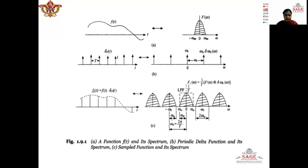To start with the proof of this theorem, we will first consider the message signal F(T). F(T) is a continuous time message signal and it is band-limited to frequency FM. When we draw its frequency spectrum by taking its Fourier transform, the frequency spectrum is represented by F(omega), where the maximum frequency component is omega_m. To do the sampling of this continuous time signal we will multiply this message signal F(T) by a train of impulses delta_T(T).